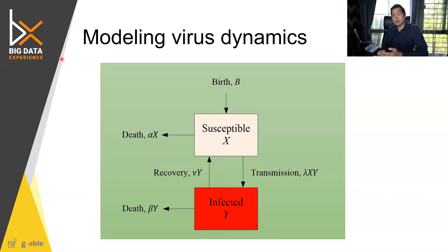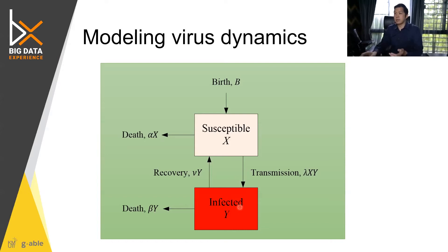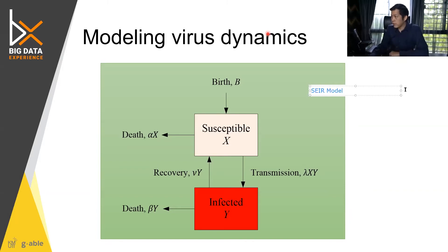There is a model that epidemiologists use to explain infection spread at the population level. One basic model treats populations as pools of people where groups can change into one another. The SEIR model contains four groups: Susceptible, Exposed, Infected, and Removed. Here we look at just two groups — susceptible and infected.